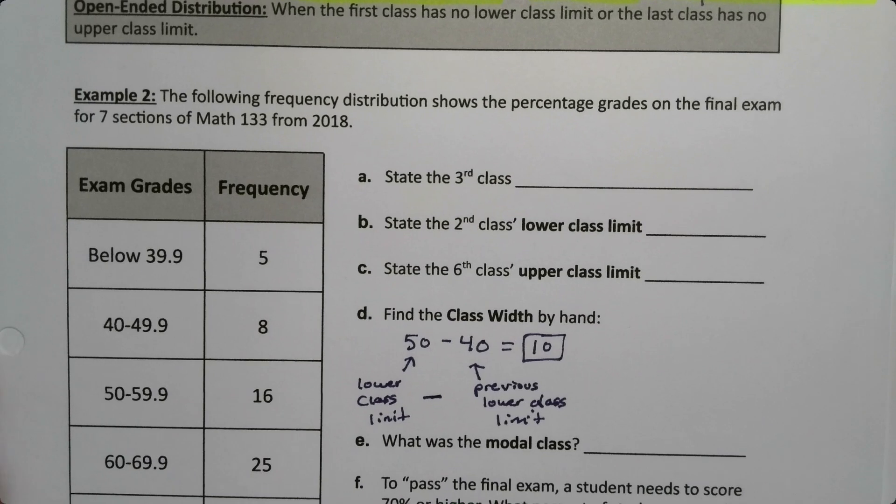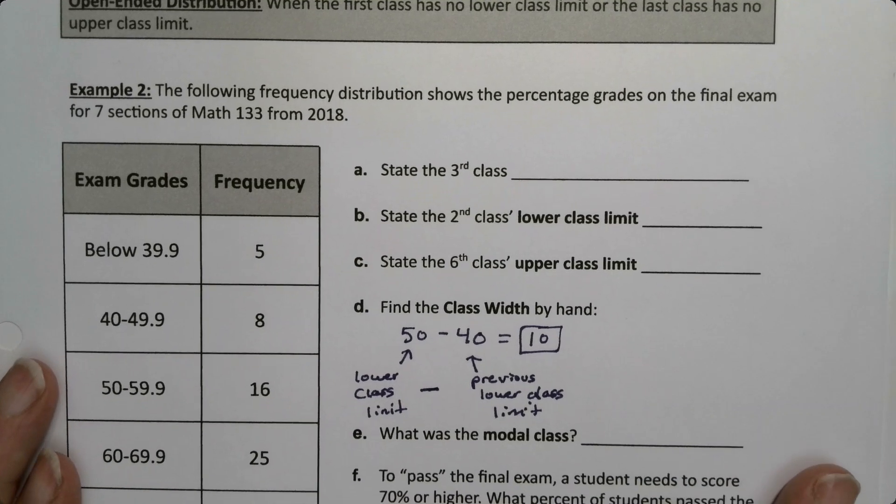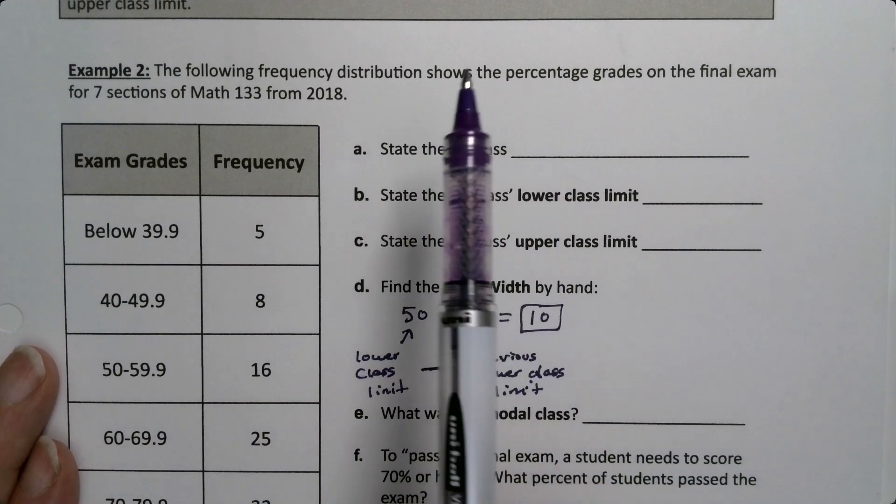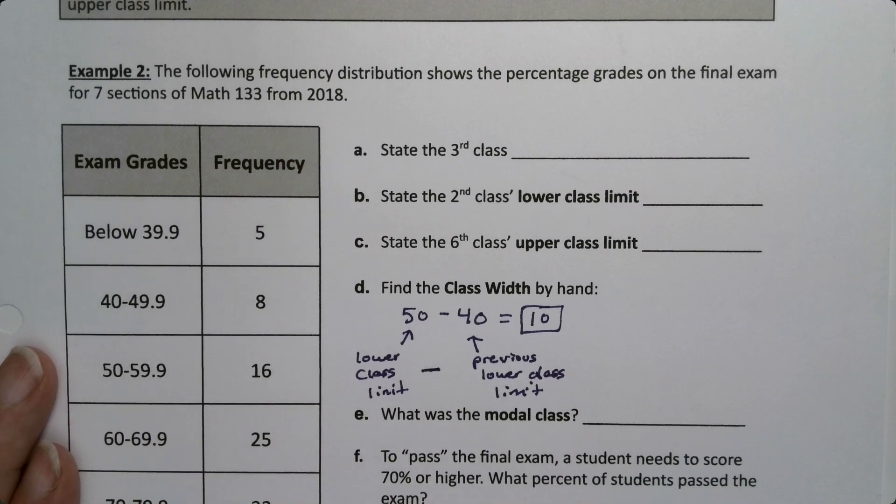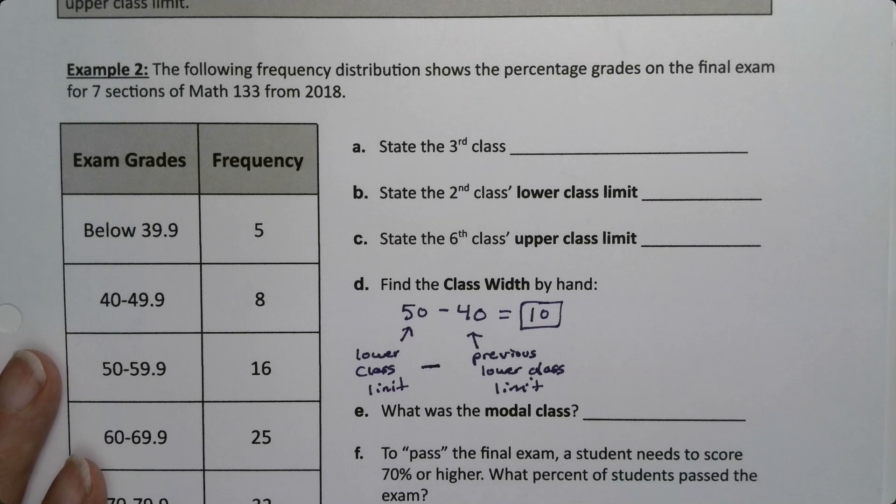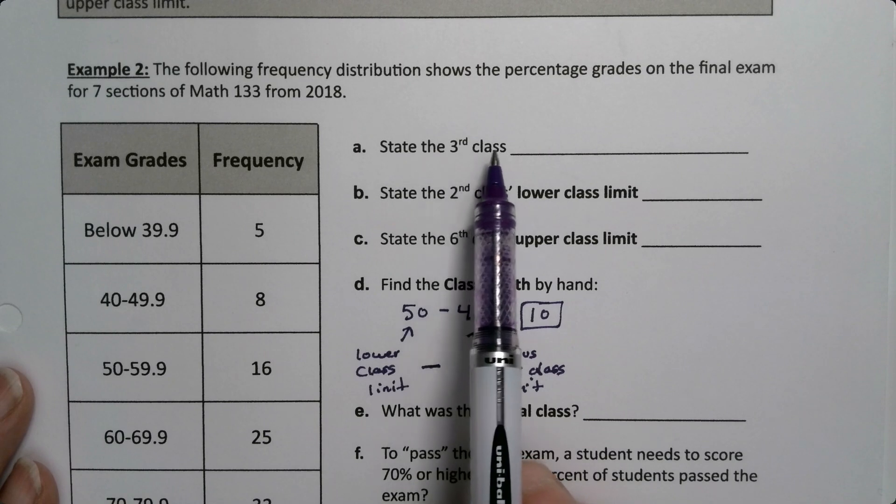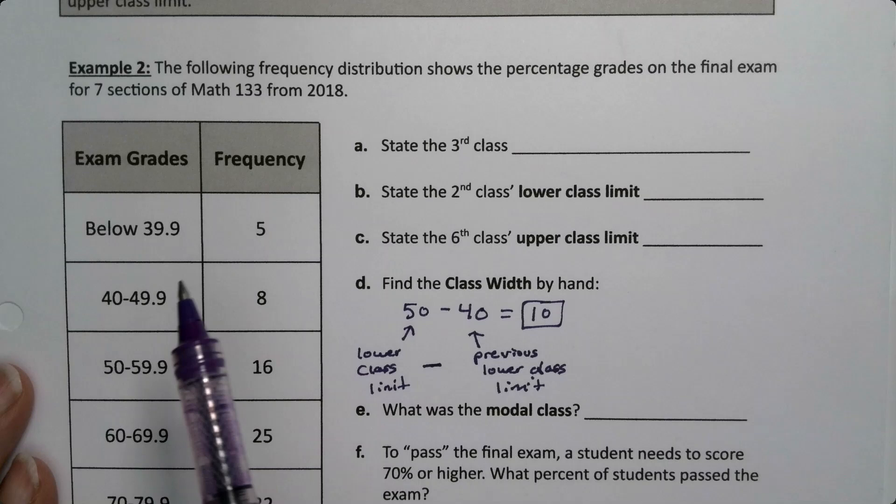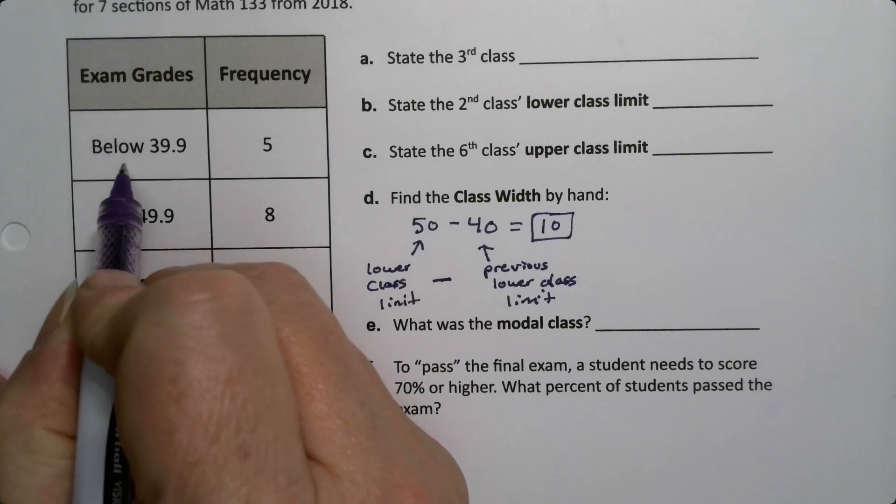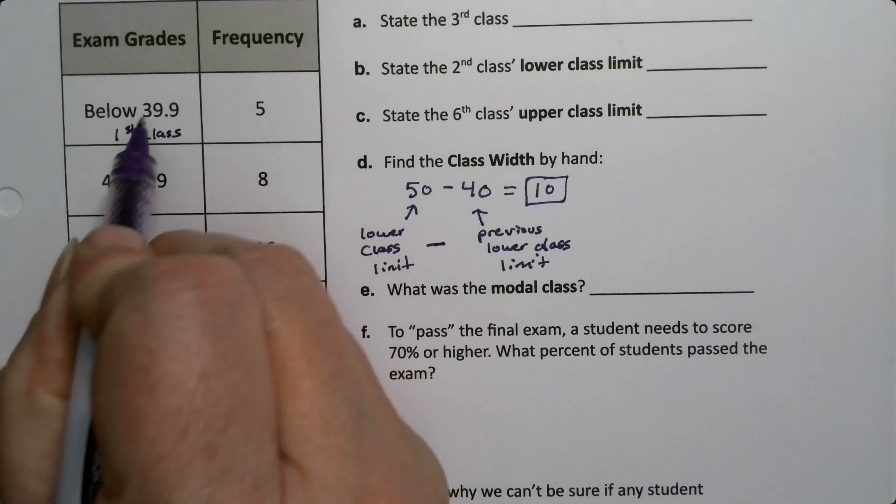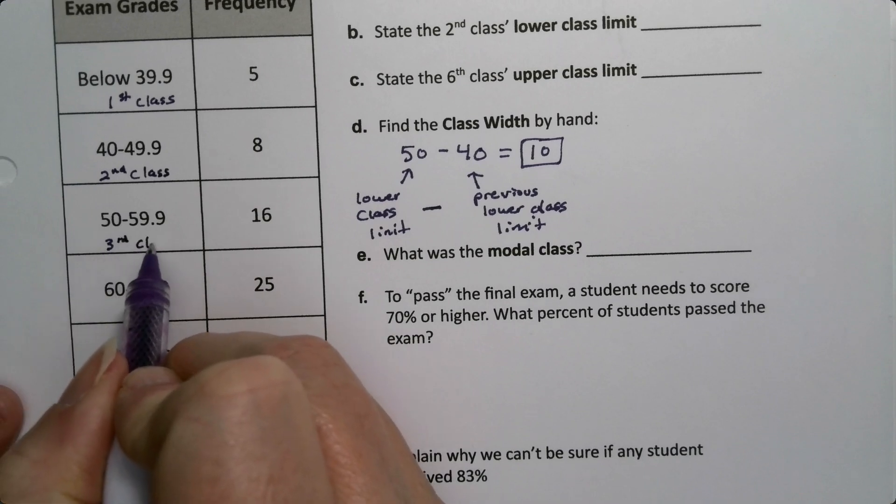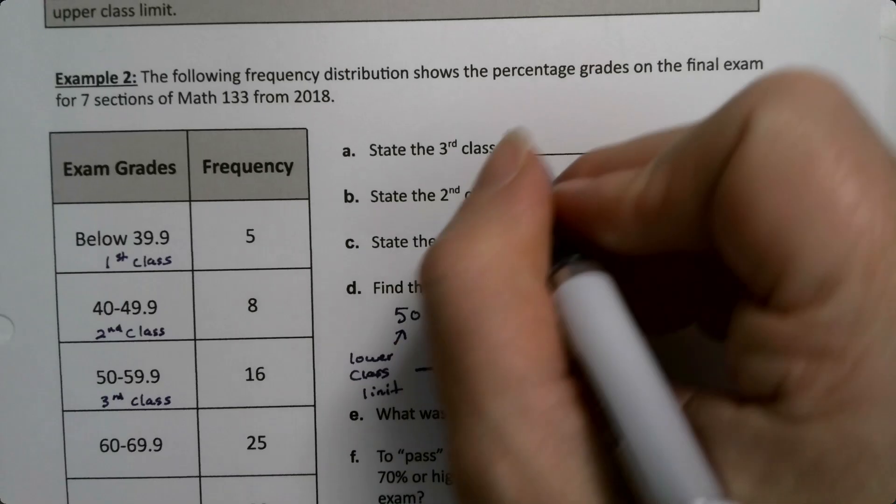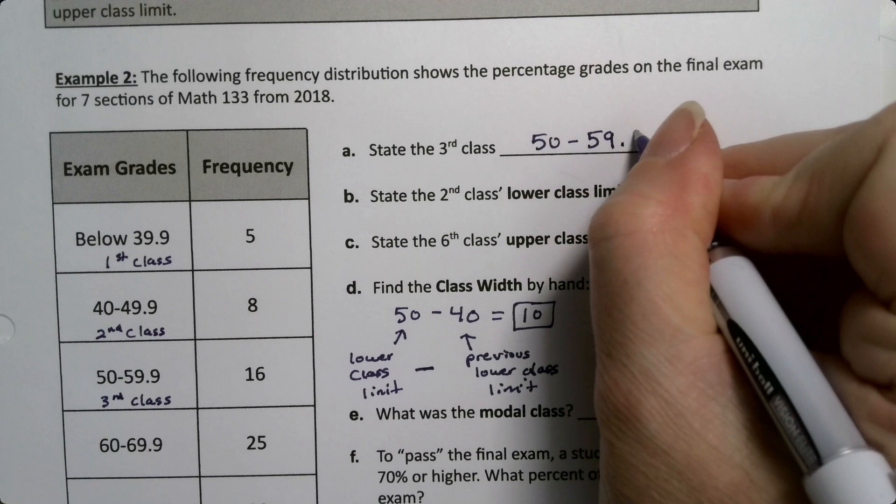Since I jumped to part D of this example, let's do some more. The following frequency distribution shows the actual real-life percentage grades on the final exams for seven sections of Math 133 from 2018. These are real data, real numbers. Let's state the third class. Classes are the bins, the lower and upper. This would be the first class, second class, and the third class is right here. So the third class will be 50 to 59.9.